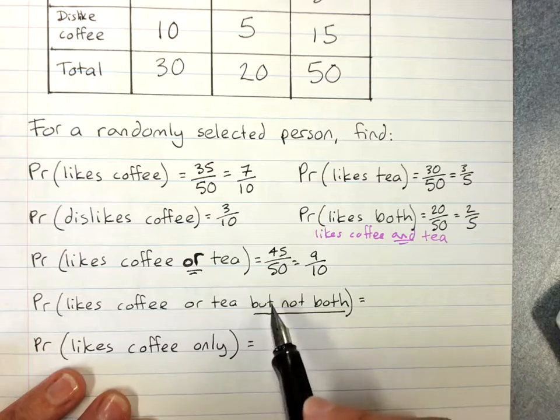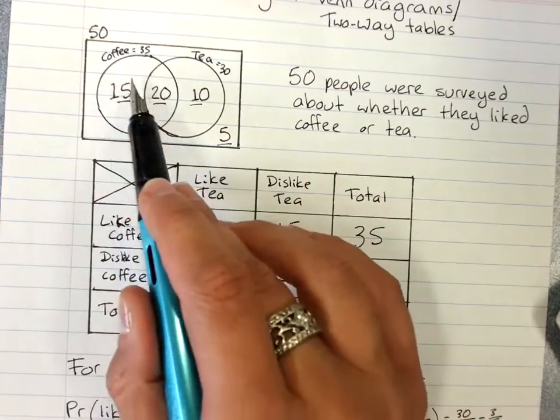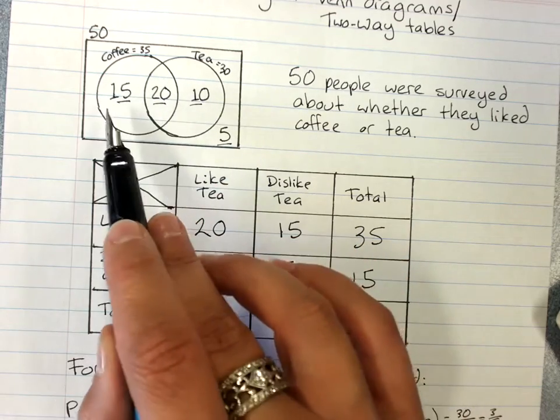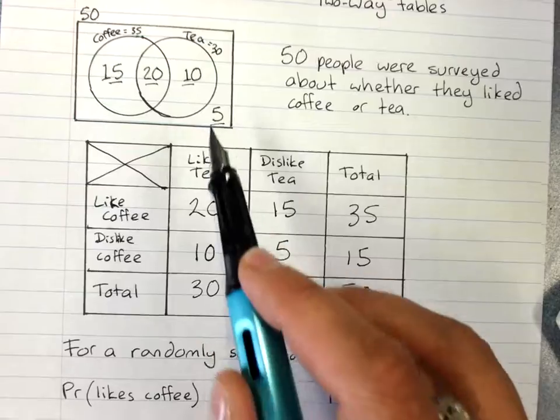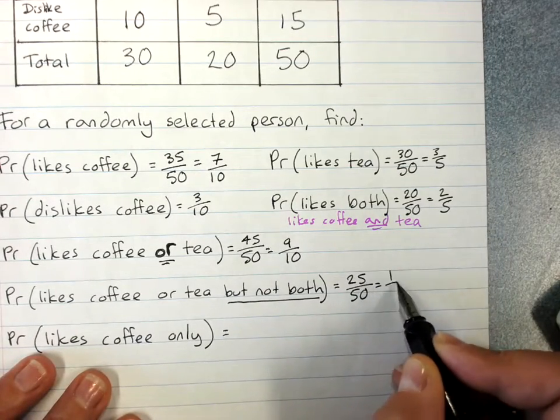Coffee or tea but not both. That would be these coffee people and these tea people but not these both people. 15 and 10, 25 out of 50. That's a half.